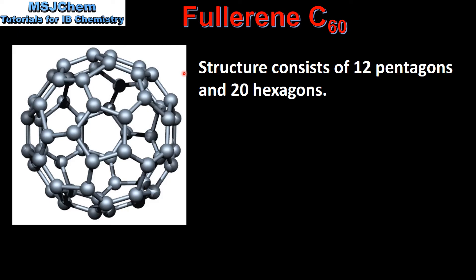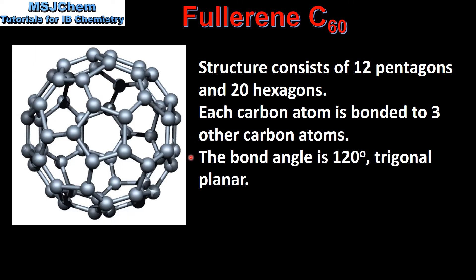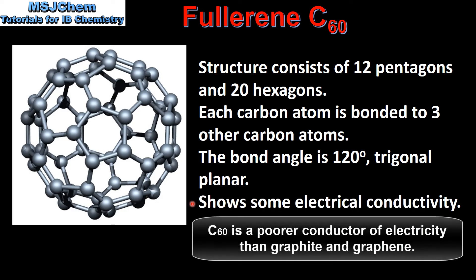Next we look at fullerene C60. The structure of fullerene C60 consists of 12 pentagons and 20 hexagons. Each carbon atom is bonded to three other carbon atoms. The bond angle between carbon atoms is 120 degrees trigonal planar. Fullerene C60 shows some electrical conductivity.